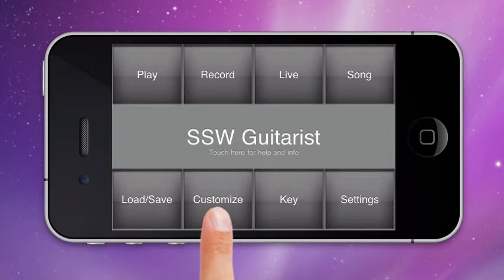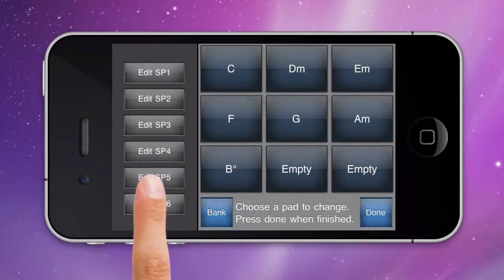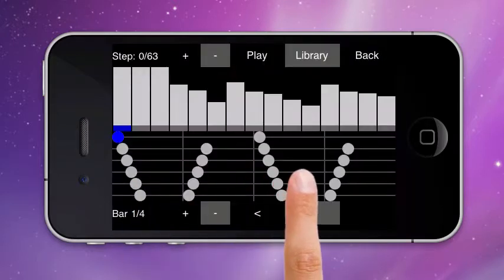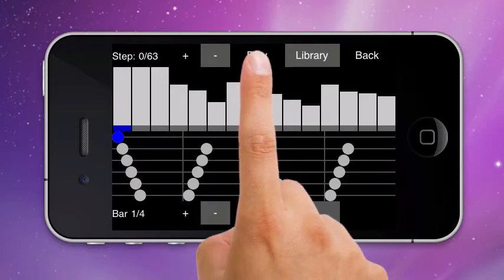You then click the customize button and choose the strum pattern you wish to edit on the left-hand side. I'm going to pick strum pattern number 5 because it includes a lot of different features. First thing I'm going to do is hit the play button so you can hear what this strum pattern sounds like at this BPM.